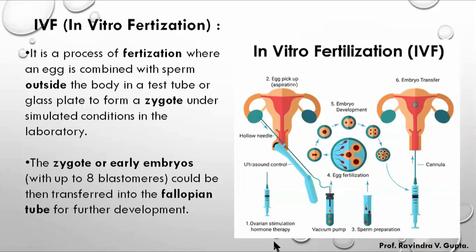Then sperm is provided and mixed with the egg in a petri dish or test tube. Fertilization occurs in the laboratory under controlled temperature conditions. The zygote develops into a blastula and morula through 2-cell to 32-cell stages. After that, the morula is artificially transferred into the fallopian tube or uterus of the female with the help of an injection.